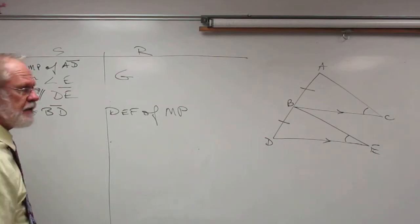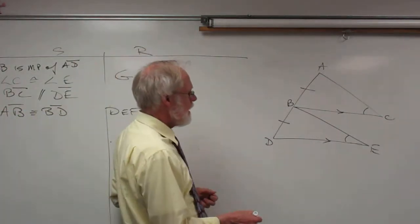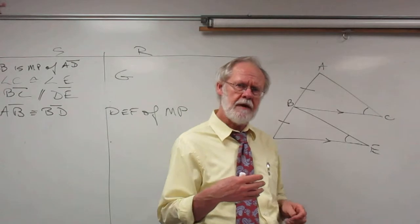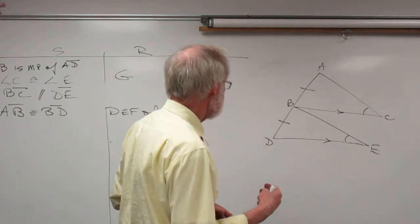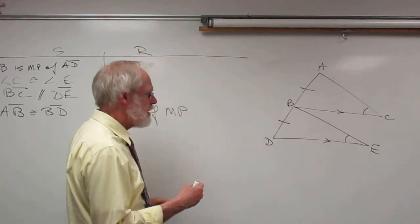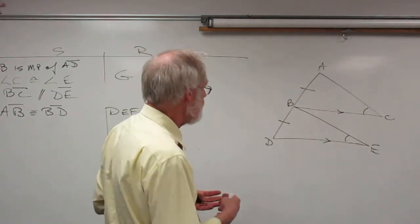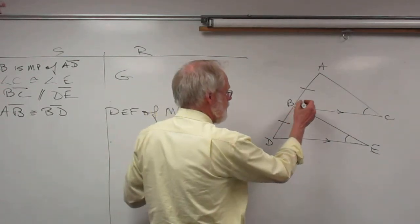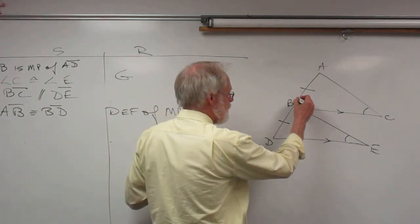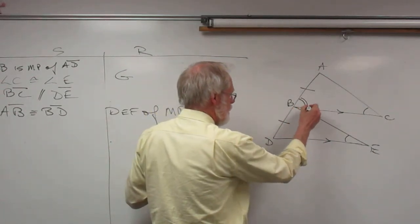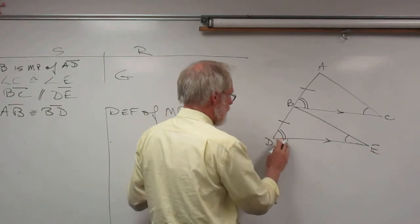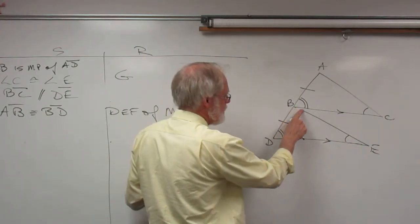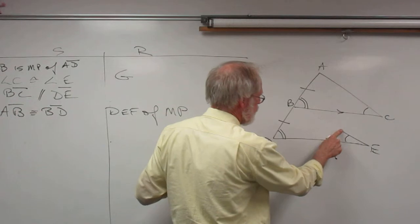The only piece of information we haven't used yet is that BC is parallel to DE. With parallel lines and transversals, there may be corresponding angles we can use. If you take away the other line temporarily, you can see this parallel line and this parallel line, and those are corresponding angles.